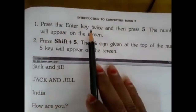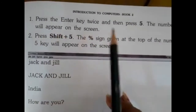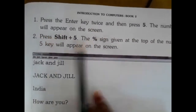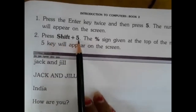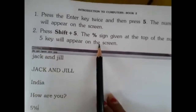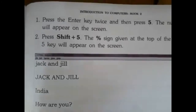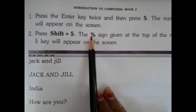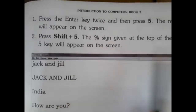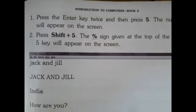Step one: press the Enter key twice and then press 5 — the number five will appear on the screen. Jo abhi maine bataya: humne number 5 press karke five screen ke upar dekha. Step two: press Shift plus 5 — the percentage sign given at the top of the number 5 key will appear on the screen. Woh bhi abhi aapko dikhaya — Shift ke saath five ka button press kiya to uske upar jo percentage ka sign tha, woh bhi screen ke upar dekhne ko mila.